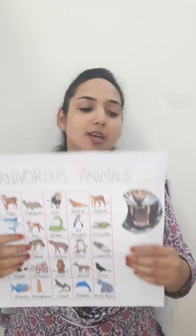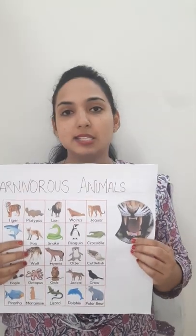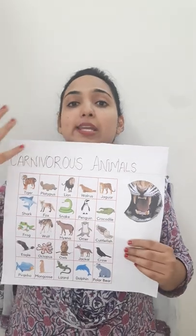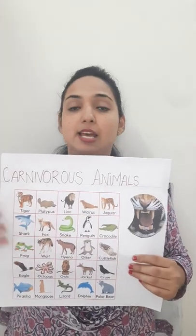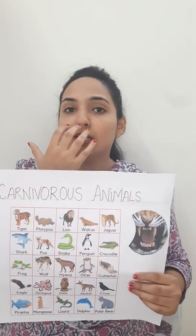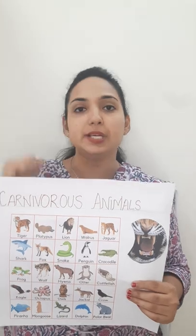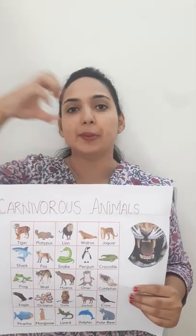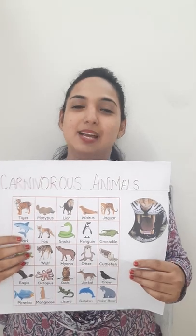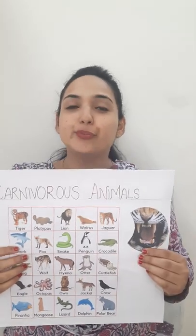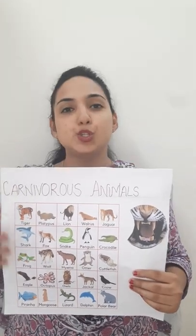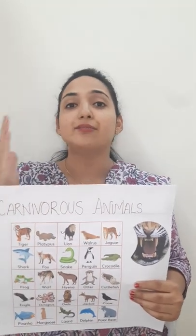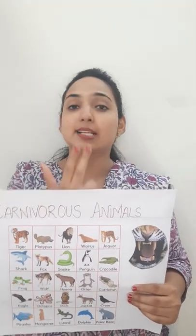All these animals have strong teeth and powerful jaws by which they hunt their prey easily and without any trouble. Here in this picture you can see they have incisors and strong canines. Incisors support their lips to hold the meat, and their canines help them in ripping the meat apart.